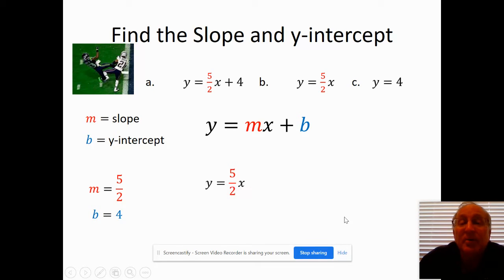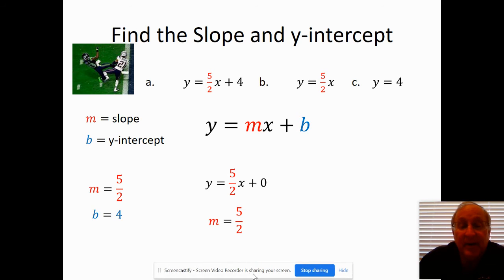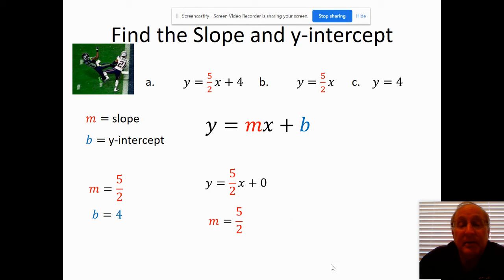In the second problem, notice you have y equals 5 halves x, that means plus 0 would be my b. You don't have to write the plus 0, but I'm doing that as a teacher to show that m is 5 halves and b is 0. Even though it's not written doesn't mean it doesn't exist. 0 is a number.